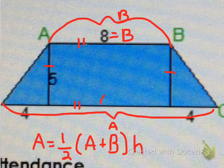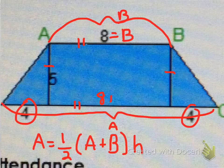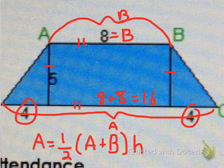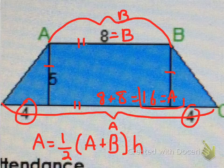So this is going to be 8, so if we add 8 plus this 4, plus this 4, that's going to be another 8. That's going to equal 16, and 16 is going to equal A, and we know that the height is 5.